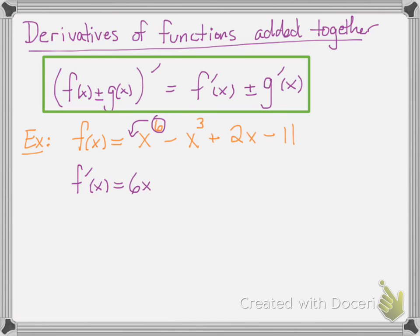For x to the sixth, take that sixth, bring it down in front, and subtract one from the exponent. Then minus whatever derivative of x to the third is — take that three, bring it down in front, and turn the three into a two. The derivative of 2x is just 2 because it's linear. And the derivative of 11 is 0 because it's a constant, so you don't need to write 0. And there's your derivative.